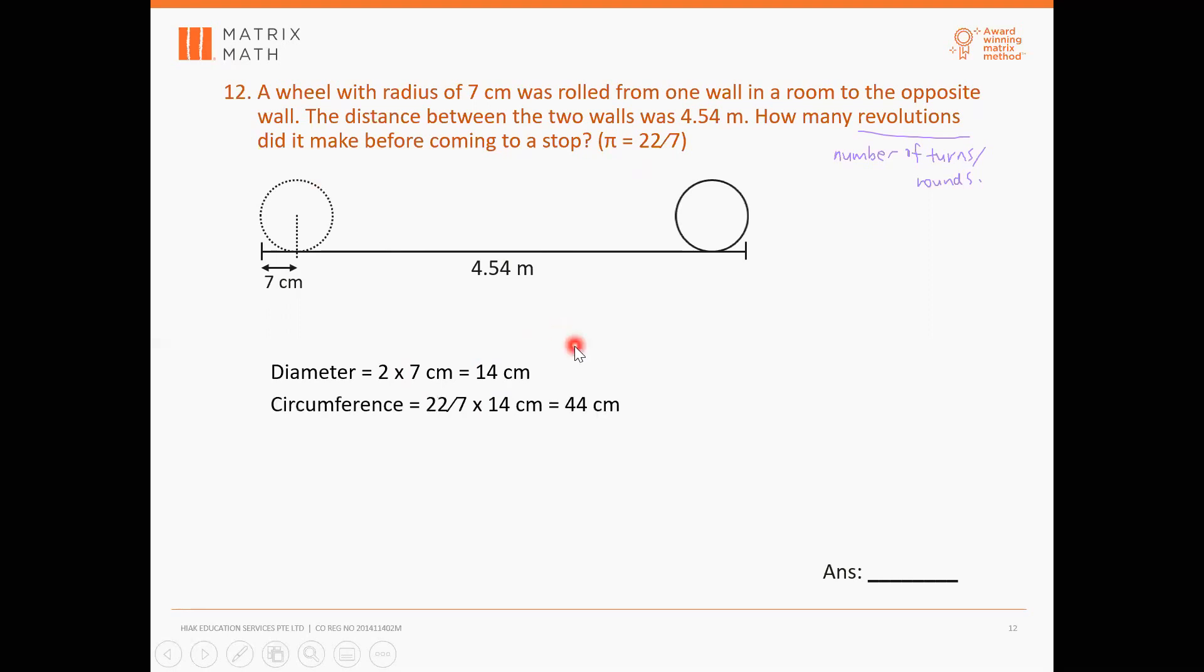Okay, so the reason why we find circumference is because when you make one complete turn, when the wheel makes a complete turn, it rolls forward one time and it makes a complete turn. That complete turn is equal to the distance covered by the circumference. Everyone agree with that?